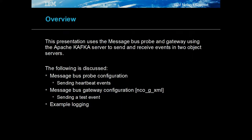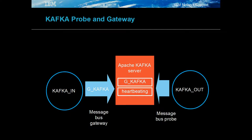The example environment uses two object servers, which each are connected to by the message bus probe and gateway. The gateway will be configured to write events to the Kafka server, and the probe will read these events into another object server. This configuration allows both the probe and gateway configurations to be examined. The Kafka_in object server forwards events to the Kafka server using the G_Kafka message bus gateway. The probe reads the G_Kafka topic populated by the gateway and inserts them into the Kafka_out object server.